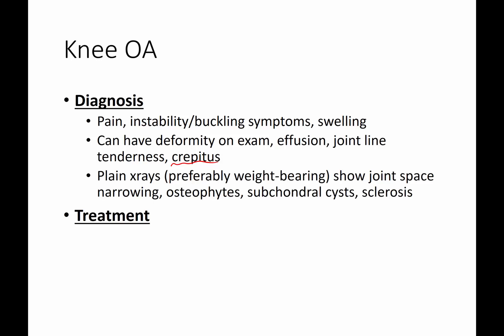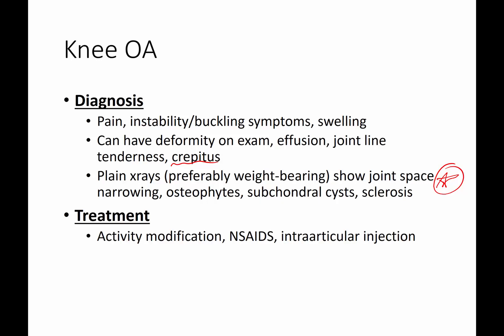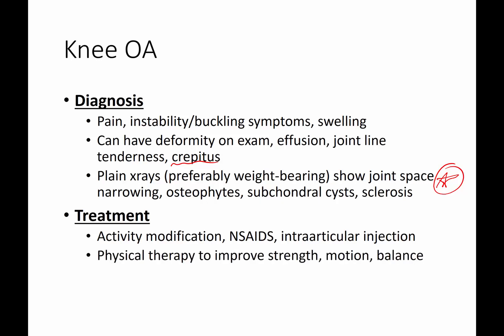Plain x-rays, preferably weight-bearing x-rays with the patient standing, may show these key findings. Treatment is activity modification — so avoiding impact activities, for instance. Non-steroidal anti-inflammatory medications, and in some cases intra-articular injection like steroids as an anti-inflammatory measure. Physical therapy can be helpful to improve strength, motion in a stiff joint, and overall balance. There is also a role for surgical treatment, particularly total joint arthroplasty or joint replacement for end-stage arthritis.